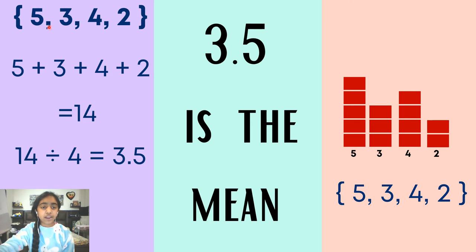So in the data set 5, 3, 4, and 2, the mean is 3.5. Do we need to round off our mean? 3.5 will not be rounded off to 4. That is not needed. Our mean is simply 3.5.